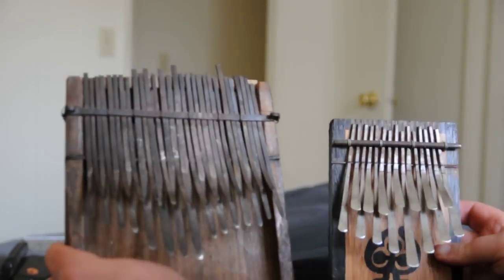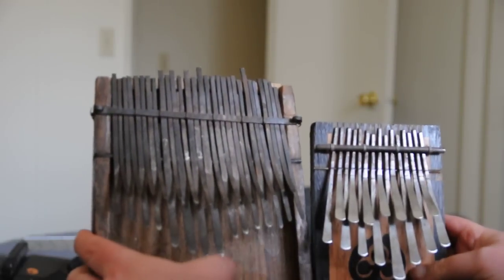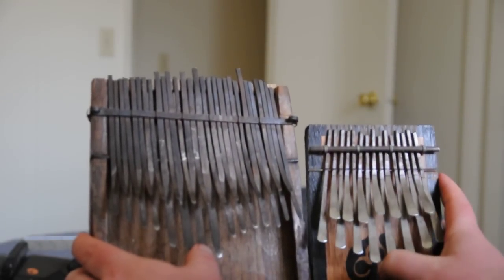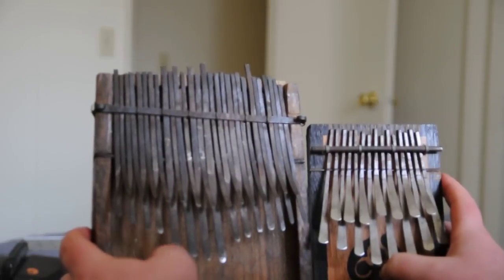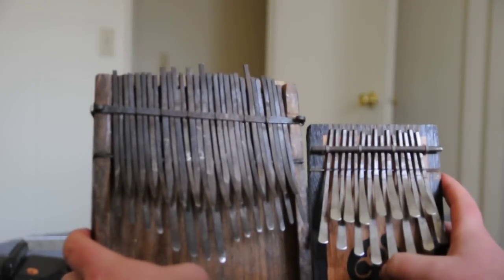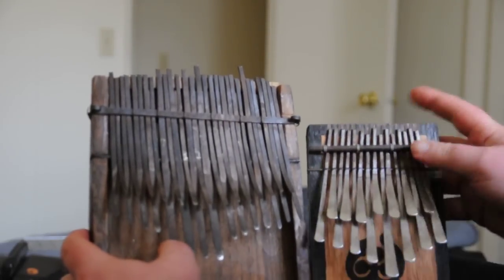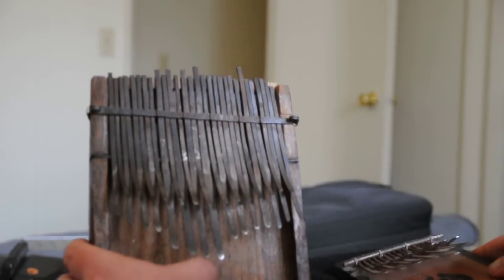So they're very similar. The enjari, what it does do though, is it fills in the missing second, which would be right here. That is an octave to that note. And then it also adds the fourth of the scale, which the Nunga Nunga misses entirely.